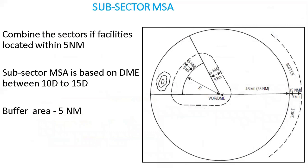In sectors centered on a VOR DME or NDB DME, it is possible to define an additional boundary based on a DME arc within a sector, dividing the sector into two sub-sectors with the lower MSA in the inner area. The DME arc radius R used should be between 10 and 15 nm. In order to avoid the use of sub-sectors of too small a size, the width of the buffer area between the sub-sectors remains 5 nm.